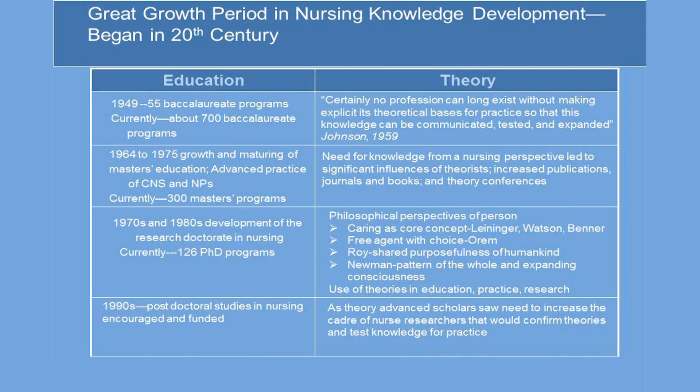I will summarize just a few of the key facts in the chapter about the great growth period in nursing knowledge development that began in the 20th century. We see the parallel between what was going on in nursing education and nursing theory. In 1949 through about 1955, baccalaureate programs were developing. Currently, we have about 700 baccalaureate programs. In 1964 to 1975 was the growth and maturing of master's education in nursing.